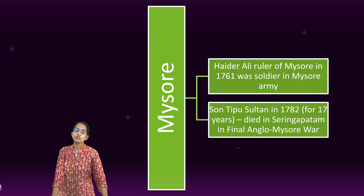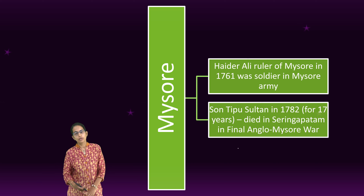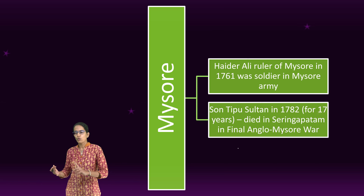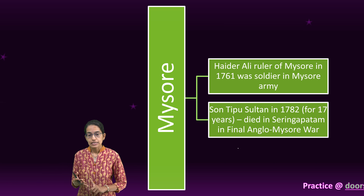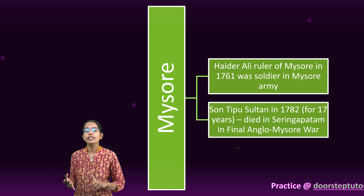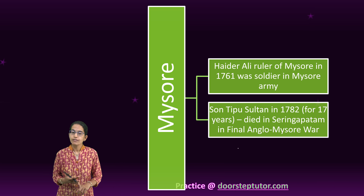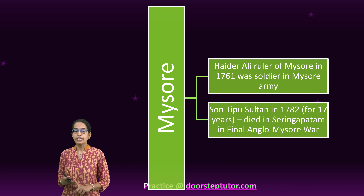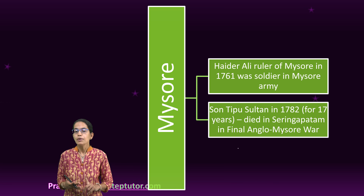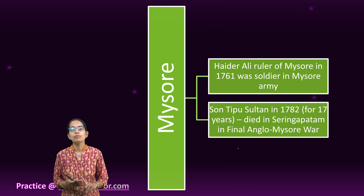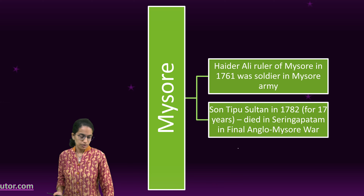The contributions of Tipu Sultan are numerous. The most important were to modernize weapons, the navy, and industries in India. He was highly influenced by the ideas of the French Revolution and tried to bring in a liberal thought process in the minds of Indian people.